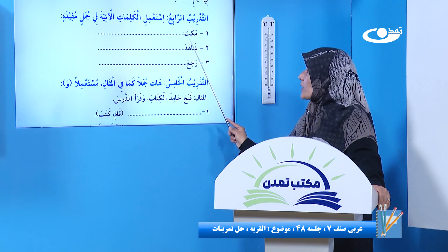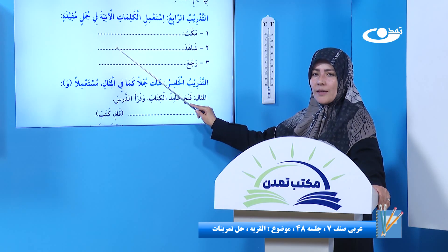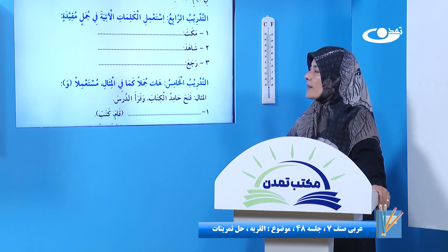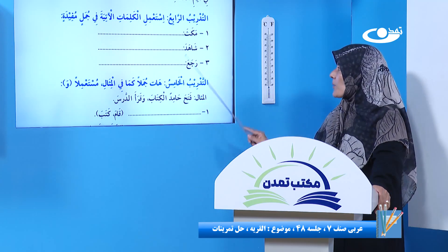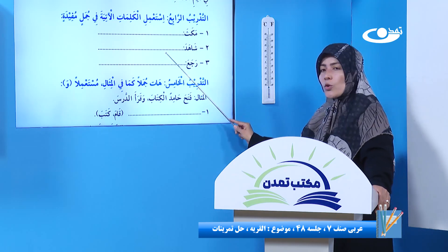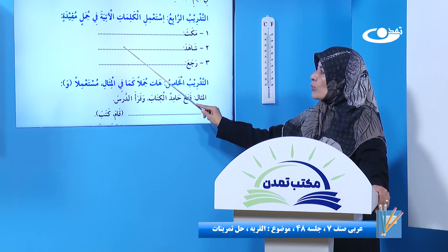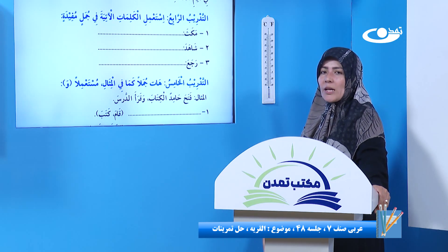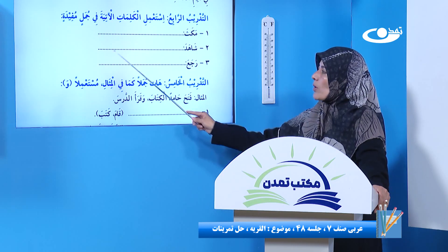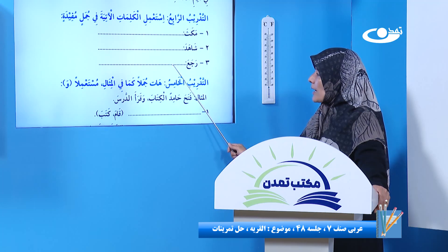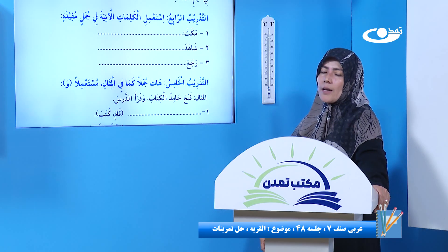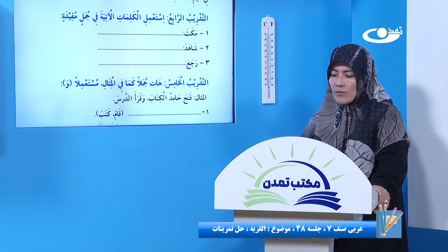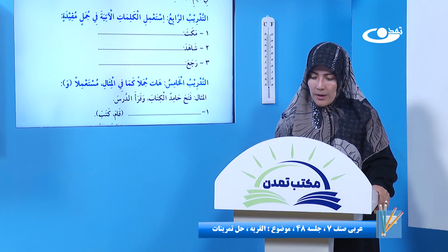مثلاً برای مکث جمله بسازین: مَکَثَ علیٌ في المدینةِ - علی در شهر روزهایی را توقف کرد. شاهدَ علیٌ في المدینةِ بیوتًا مرتفعةً - مشاهده کرد علی در شهر، چون از روستا آمده برایش عجیب است، ساختمان‌های بسیار بلند را. رجعَ علیٌ بعدَ مدةٍ إلى القریة - علی بعد از مدتی برگشت به روستای خودش.